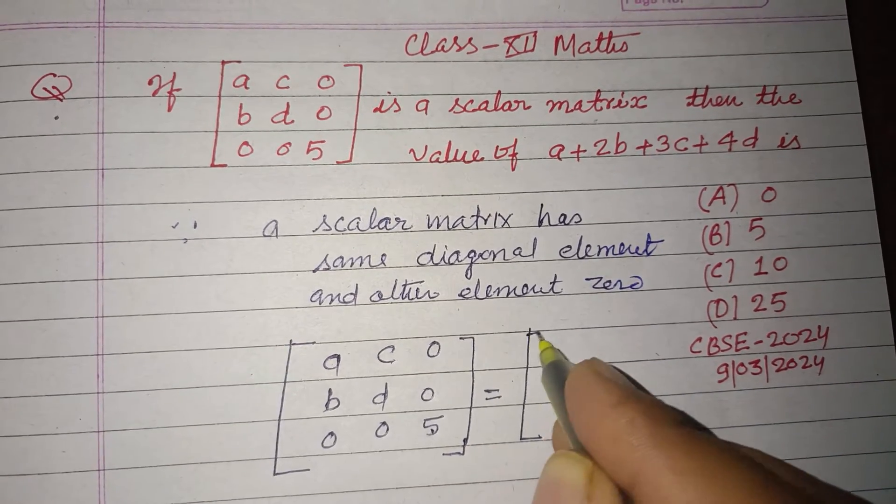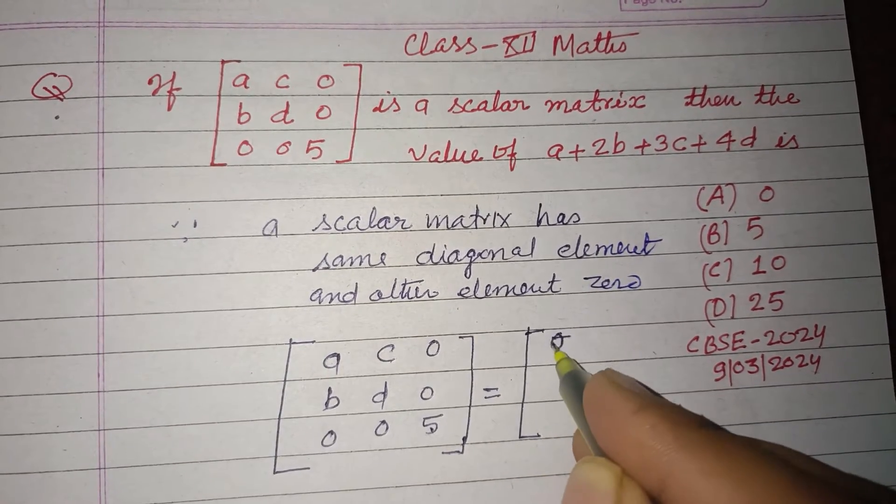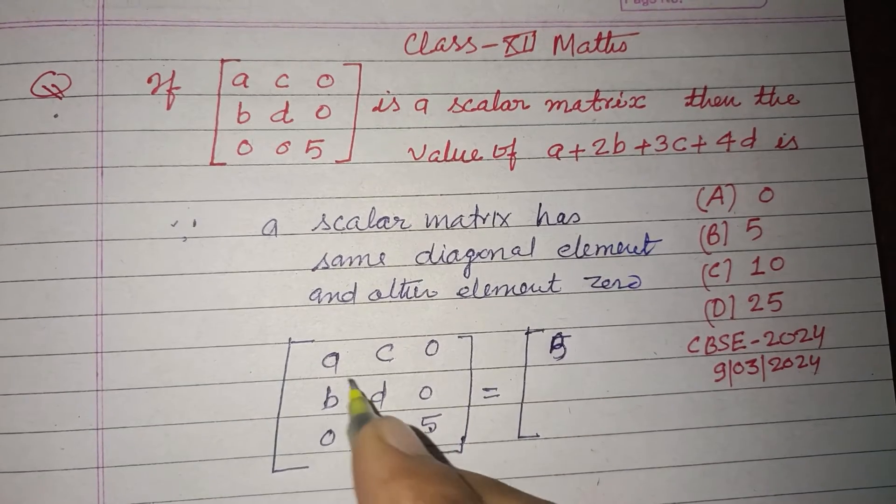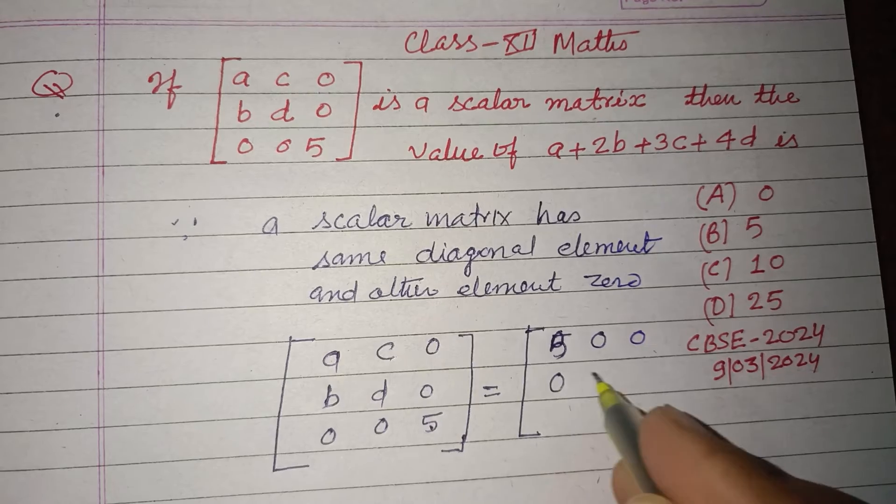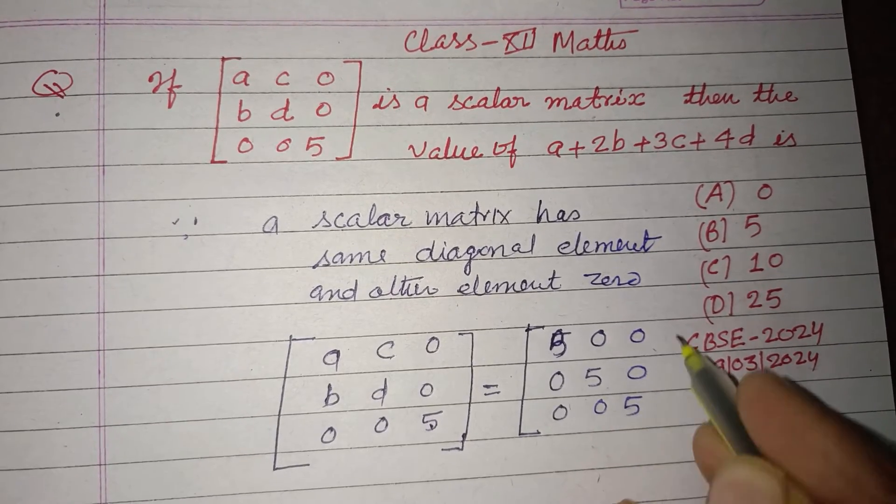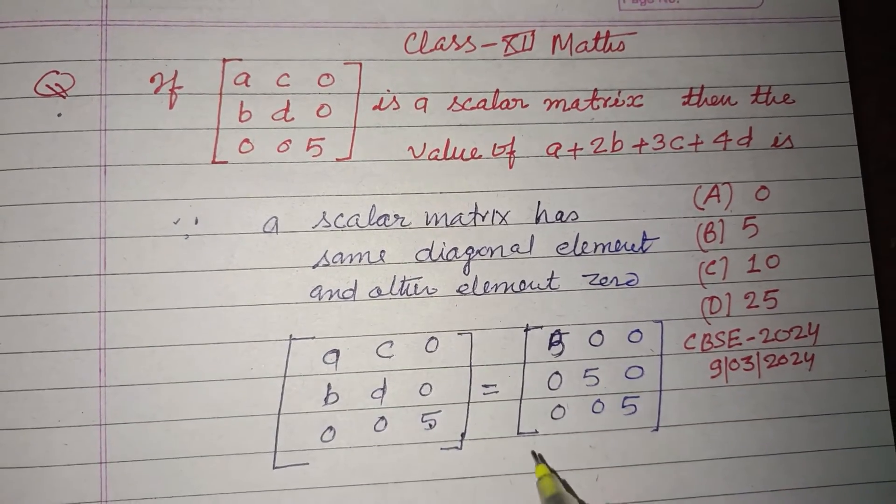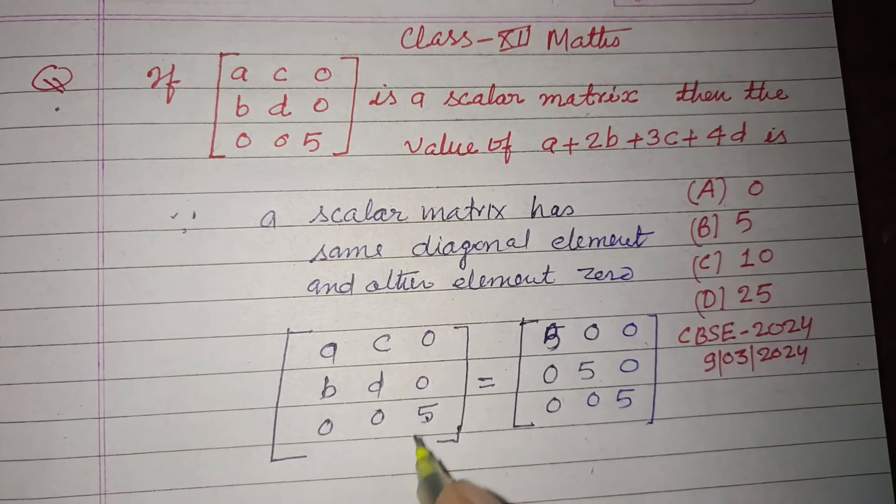So we write it as 5 (because it is a diagonal element): the matrix is 5, 0, 0; 0, 5, 0; 0, 0, 5. Now we're comparing.